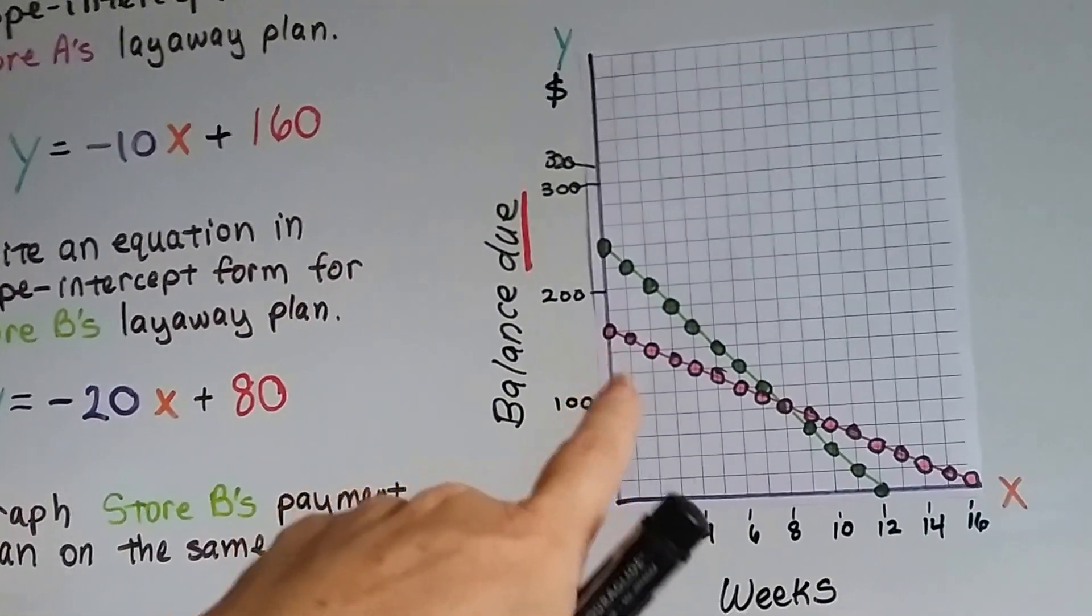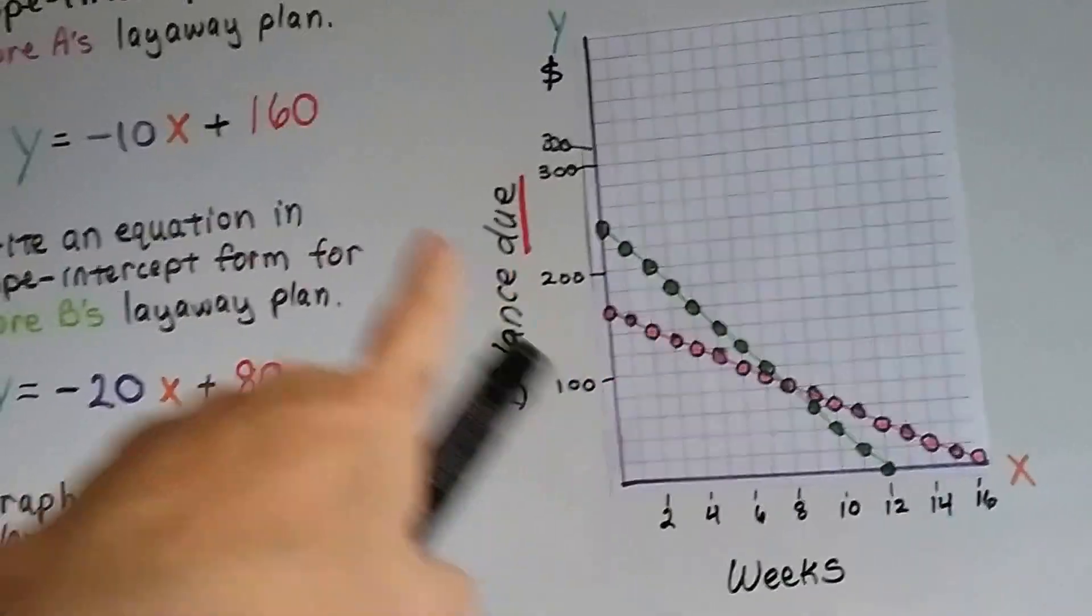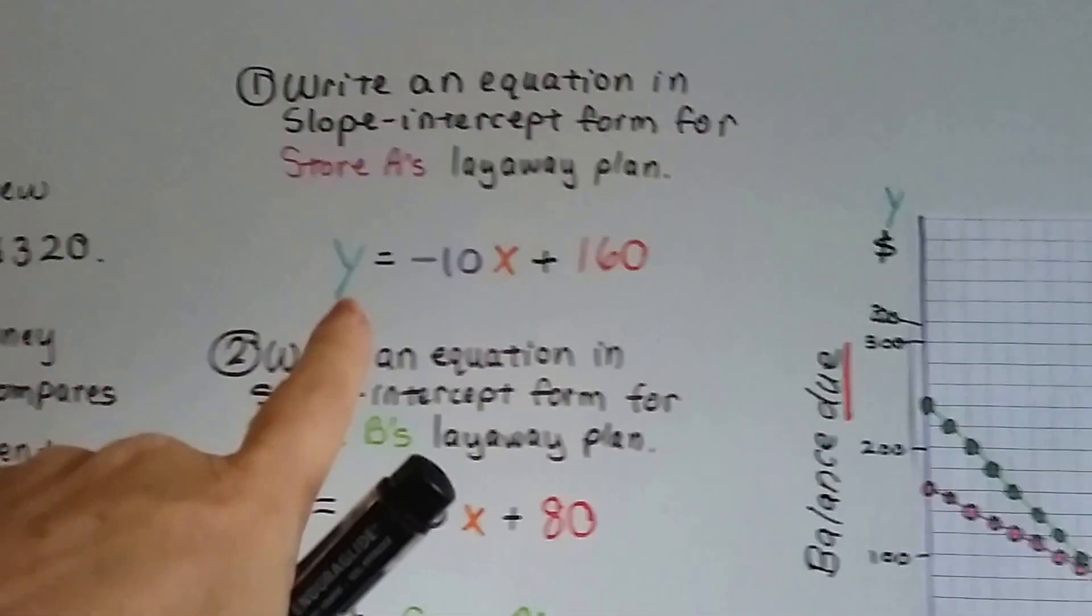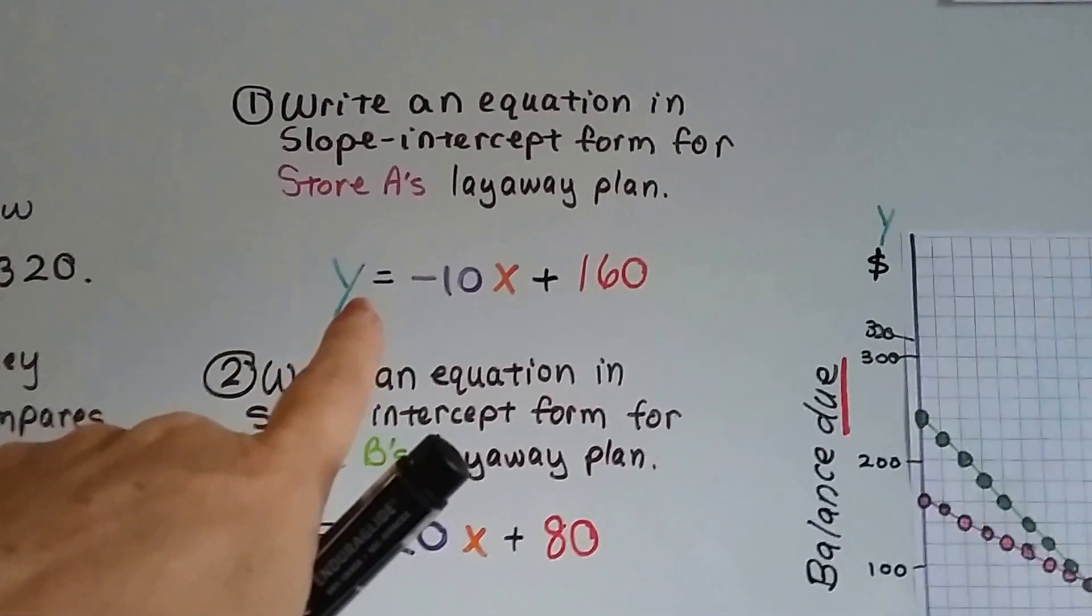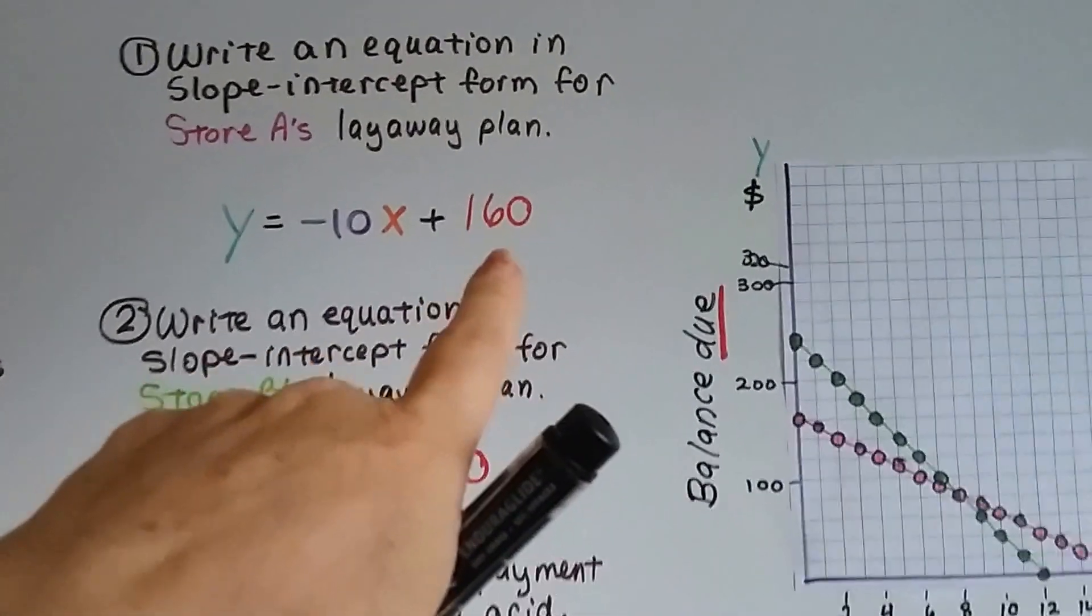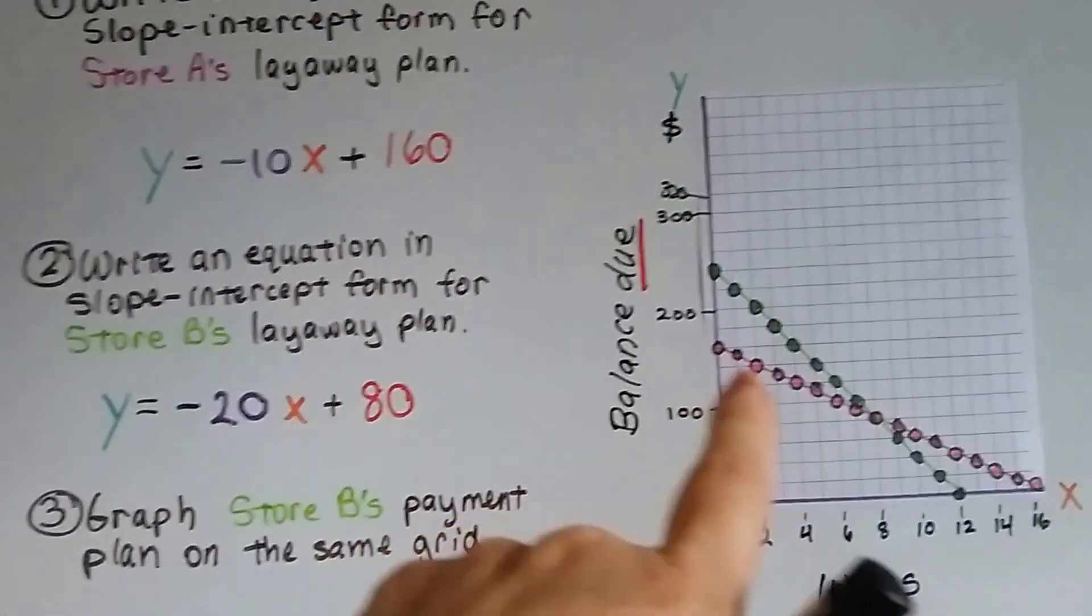And it looks like in two weeks it went down by $20, so that means it was $10 a week. So we know that our slope intercept form for our equation was y equals negative 10x plus 160. The $160 was the initial payment, and it's going down $10 a week.